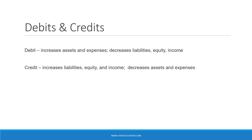We'll start with debits and credits. Knowing debits and credits is key to understanding how your bookkeeping works. Debits and credits refer to the two sides of every accounting entry. Accounting is based on a double-entry system where every transaction has a debit side and a credit side which must balance. Every transaction has at least one debit and at least one credit, and the total debits must equal total credits.